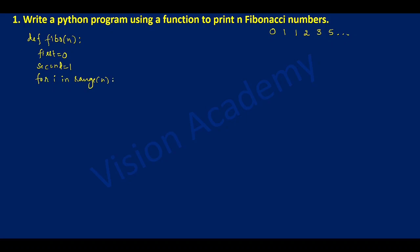of n. The i value for the first time is zero, and n is whatever value you pass to this variable. Now I'm going to write print first — after giving indentation space, I'll write print, putting the variable called first. Next I'll add a comma and write end equal to, with double quotation marks enclosing one empty space and closing the bracket,